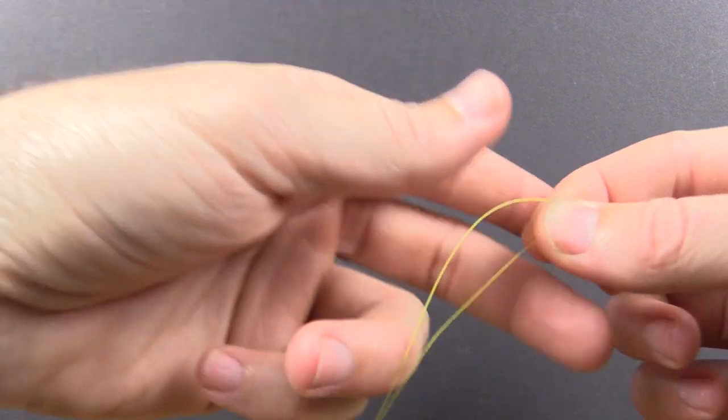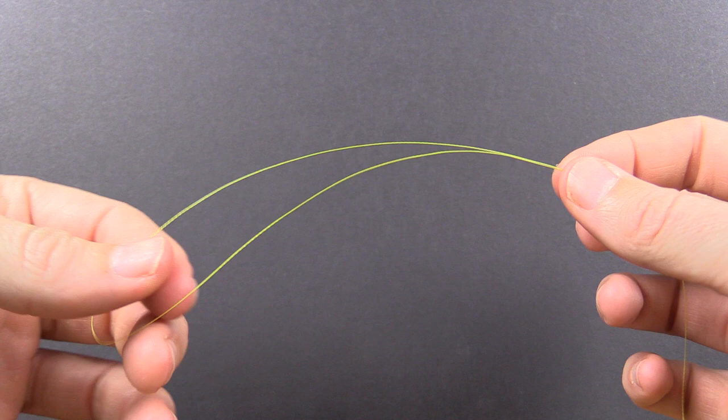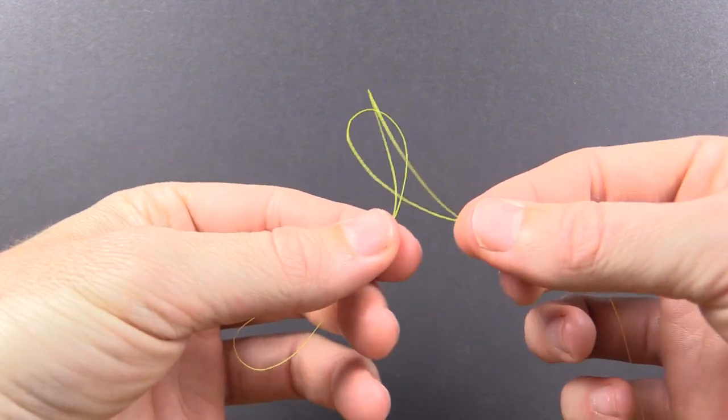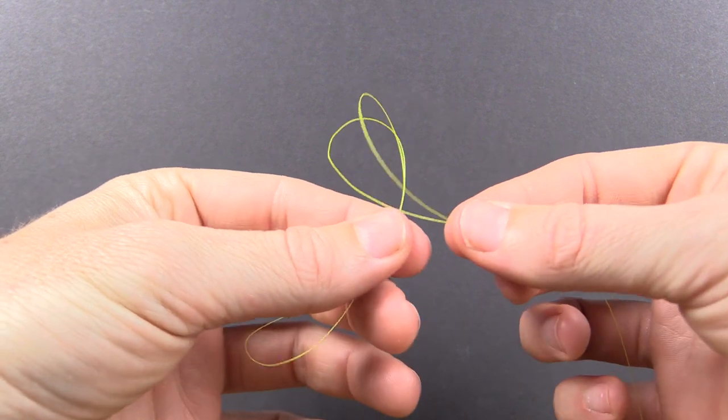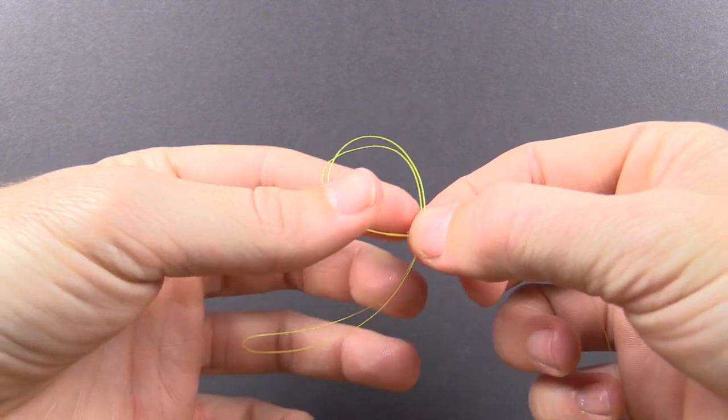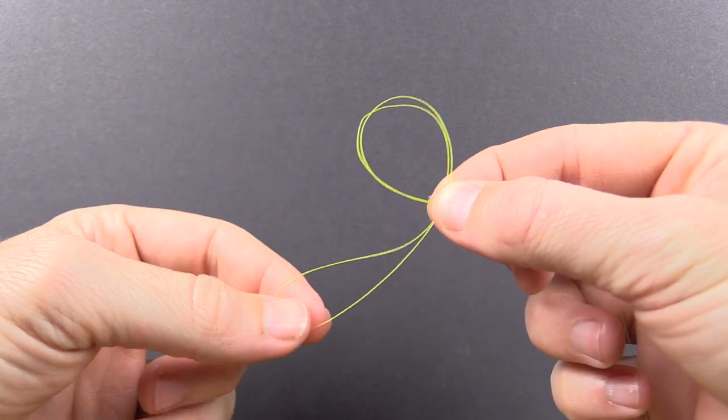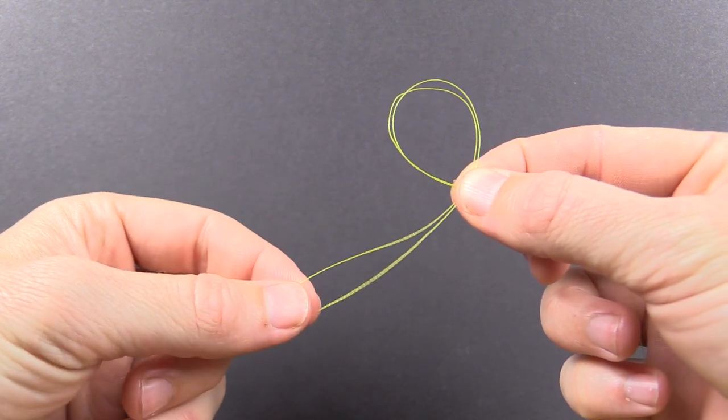So I'm going to pinch it off here with my right hand. Now we have this loop, and the first thing is just to make a loop inside of that loop, essentially. So we've basically just created the start of almost like an overhand knot where we have the tag end loop at the end.